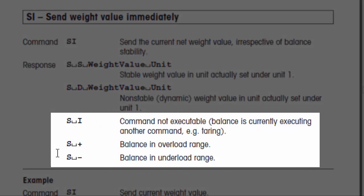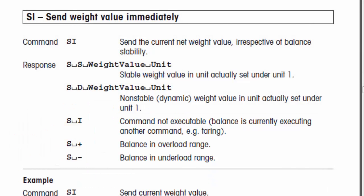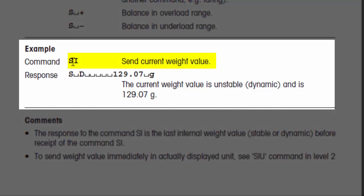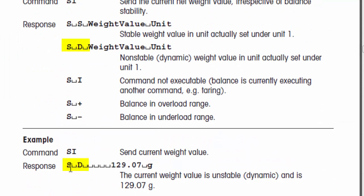There are also a couple of non-standard error-type conditions that could potentially be sent back from the scale, like if the command wasn't executable or if the balance was in an overload or underload range. We've actually accounted for those in the starter protocol, and I can show you what those look like shortly. One nice thing about this documentation is that it also gives you an example at the bottom showing what's being sent to the scale and a sample response. From that example, we can see an unstable weight response where the actual value is padded by spaces, which will also help us in how we code the message in Omni Server.